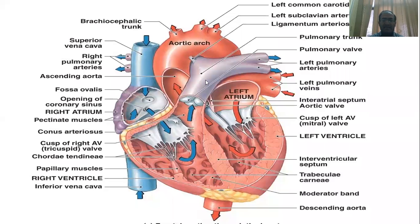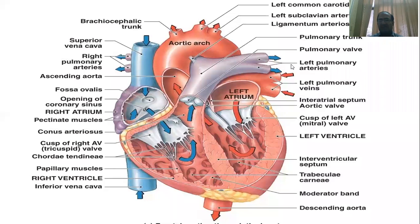This is the common pulmonary trunk. The pulmonary trunk, at the aorta level, is divided into the left pulmonary arteries and right pulmonary arteries.